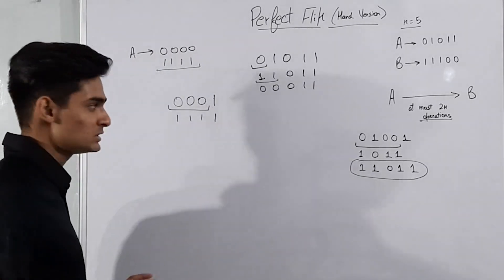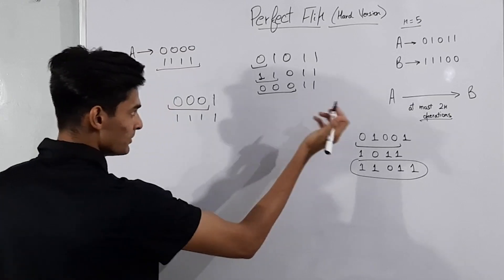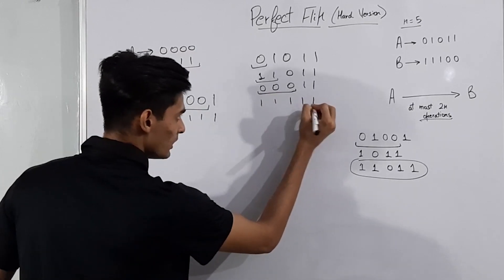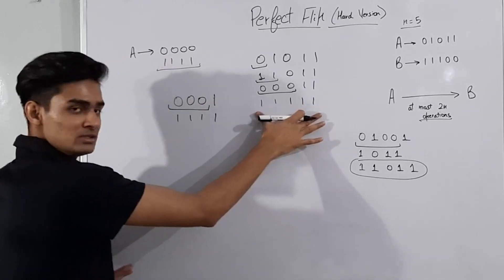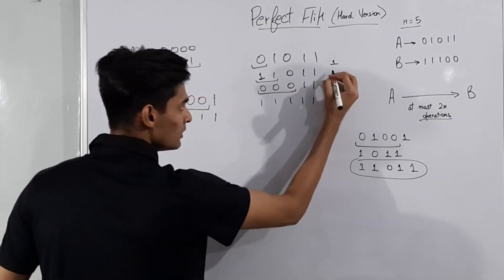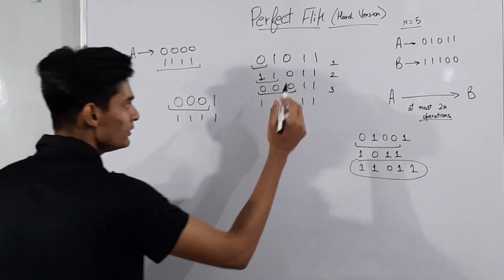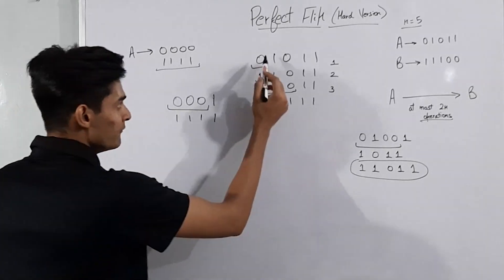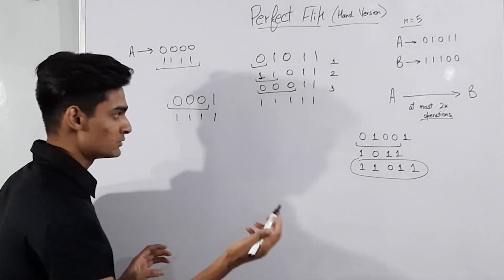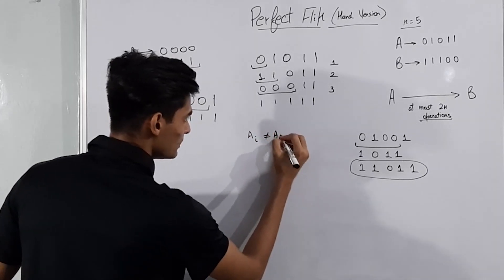We can see that we only had to make an operation when there was a difference between adjacent characters — that is, when a[i] is not equal to a[i+1]. So we only perform an operation at positions where consecutive characters differ.